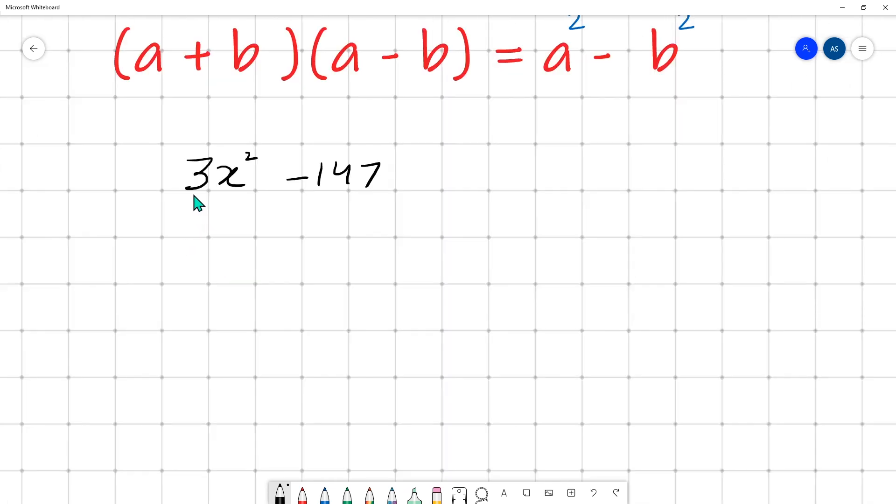Now here, this is not a square of anything and 147 is also not a square of anything. So let's see whether we can take common something from here. Yes, we can take 3 common. So it is x square minus 49. Now here we go - it is x square and the other thing is 7 square. Again, it is a square minus b square format. So we will write x plus 7 and x minus 7. We have factorized it with the help of identity, this time it is the third one.